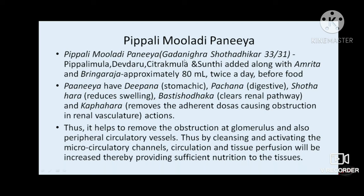Pipali Mulyadi Paniyam is mentioned in Gadha Nigraha in Shothadi Adhyaya. It contains pipali mula, devadaru, chitraka, and shunti, along with guduchi and bhringaraja. 80 ml is given twice a day. It has deepana, pachana, shotahara, and basti shota properties. It is also popular in nature, and helps remove obstruction in glomerulus and peripheral circulatory stressors — thus by cleansing and activating micro-circulatory channels, circulation and tissue perfusion are increased, providing sufficient nutrition to tissues when rasayana is administered after it.